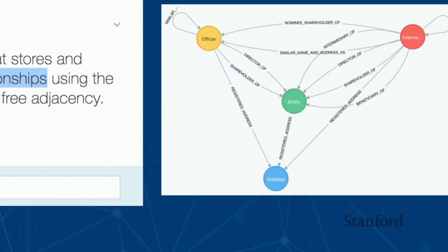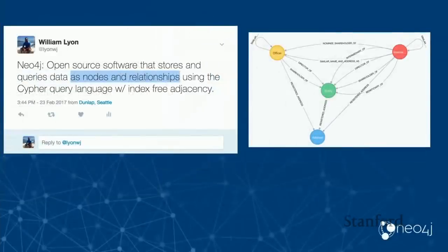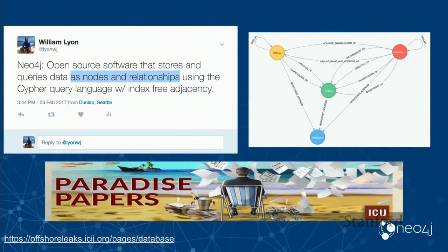We use what's called the property graph data model with Neo4j. Nodes are the entities in the graph and relationships connect them. We can store arbitrary key-value pair properties as attributes on both nodes and relationships. This data model comes from another data journalism project called the Paradise Papers — a leaked dataset of offshore corporations and the people connected to them, which made lots of interesting headlines.